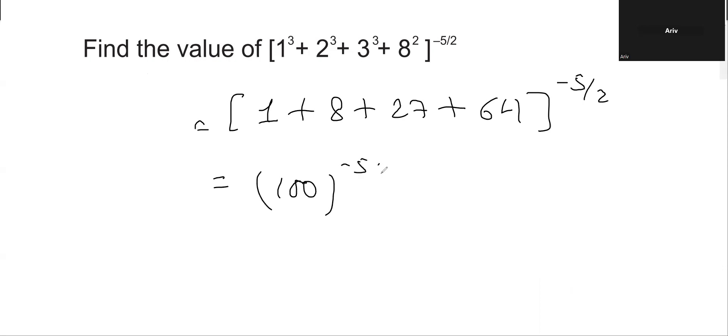Now we need to remove the denominator in the power. We can write 100 as 10², then multiply by -5/2. For power over another power, the powers get multiplied.